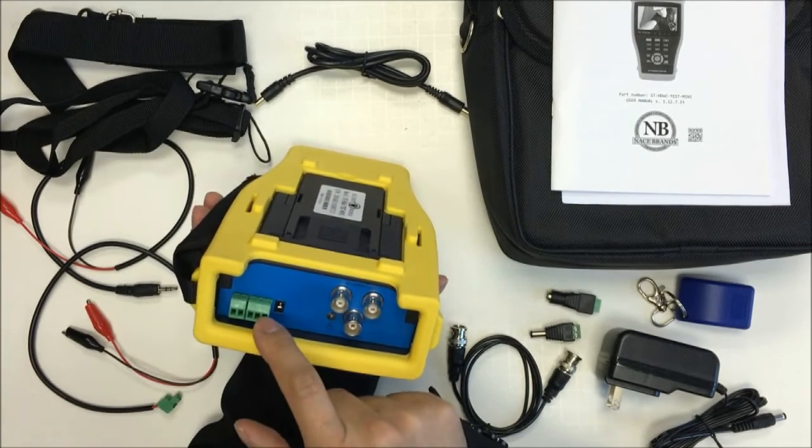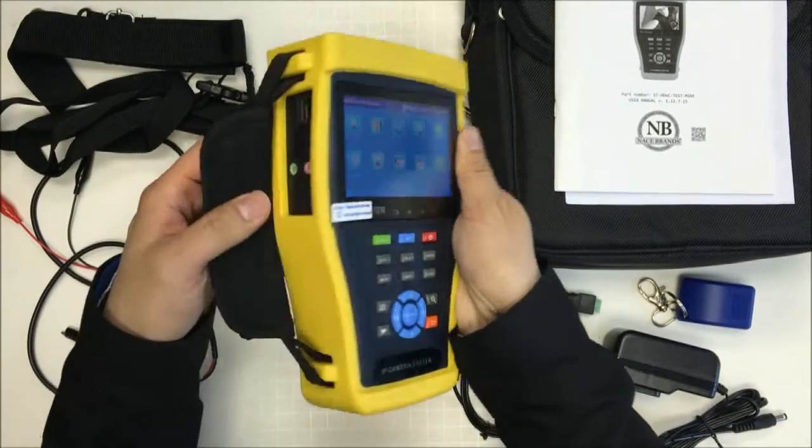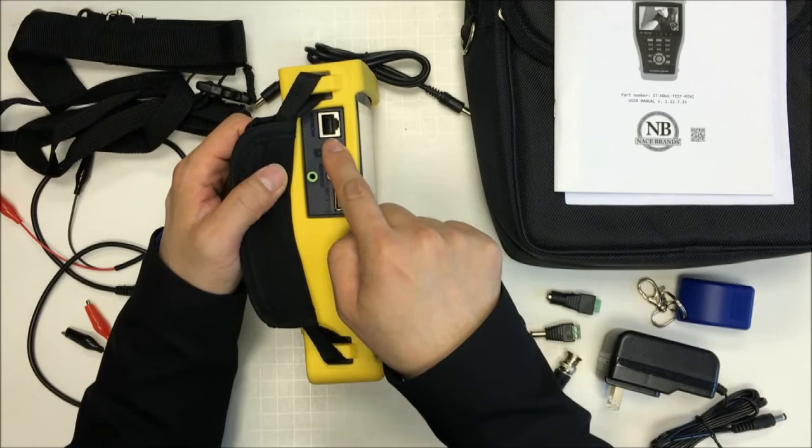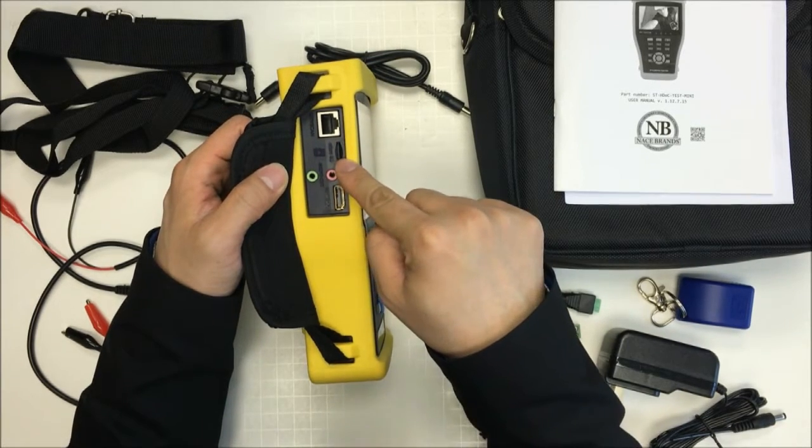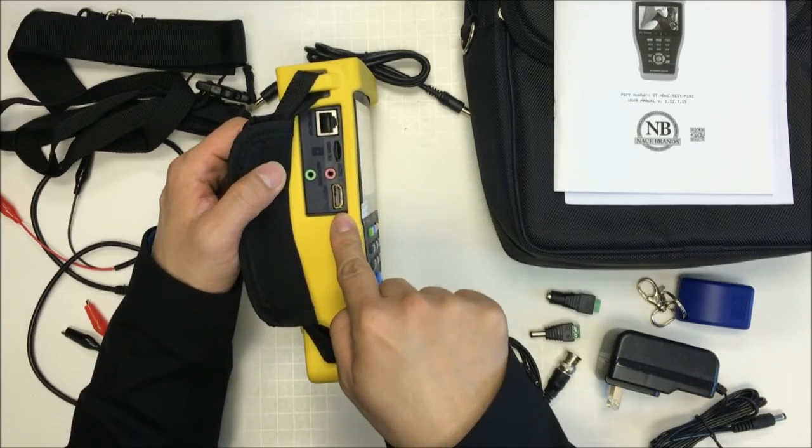This is the RS-232, RS-485. On the left there's a UTP connection which you can test the UTP cable. This is a micro SD card, audio input, audio output, HDMI output.